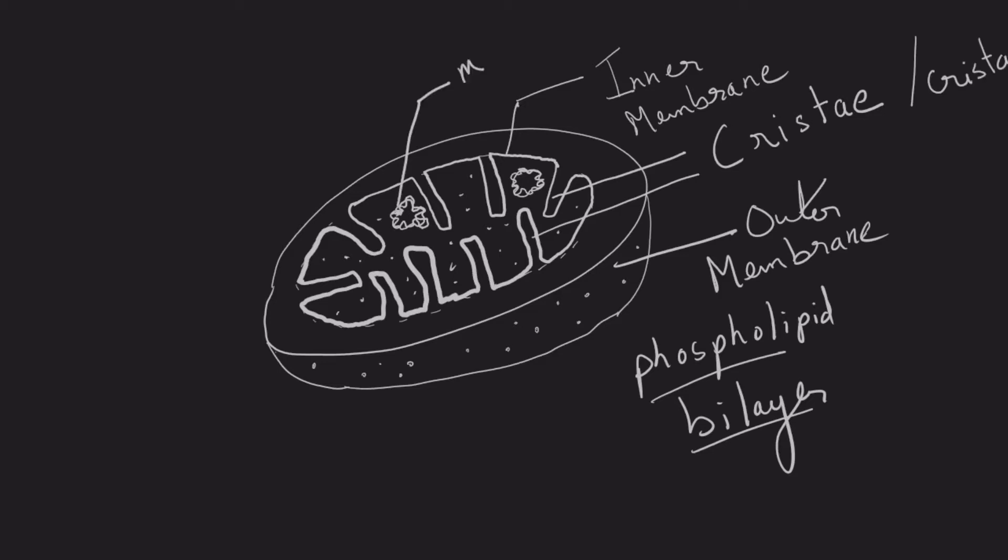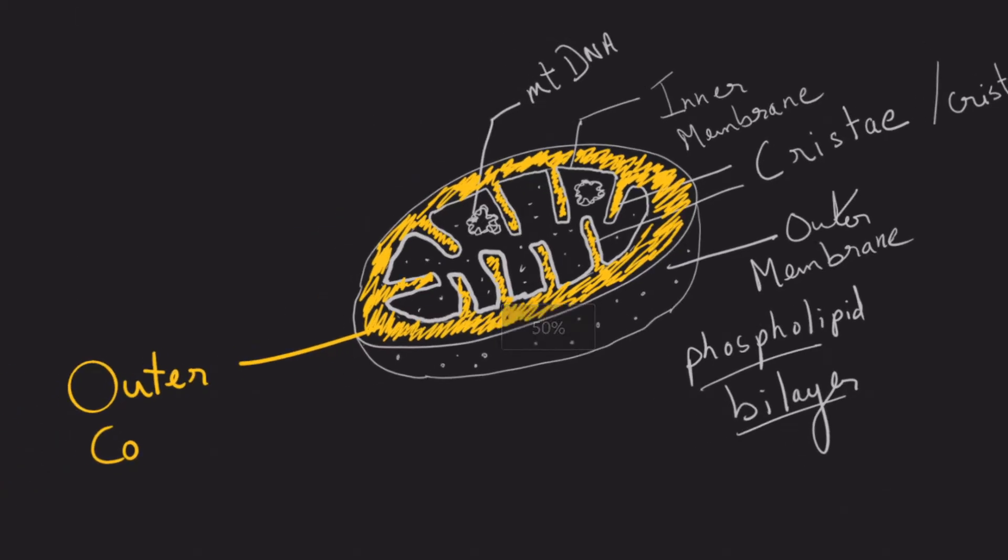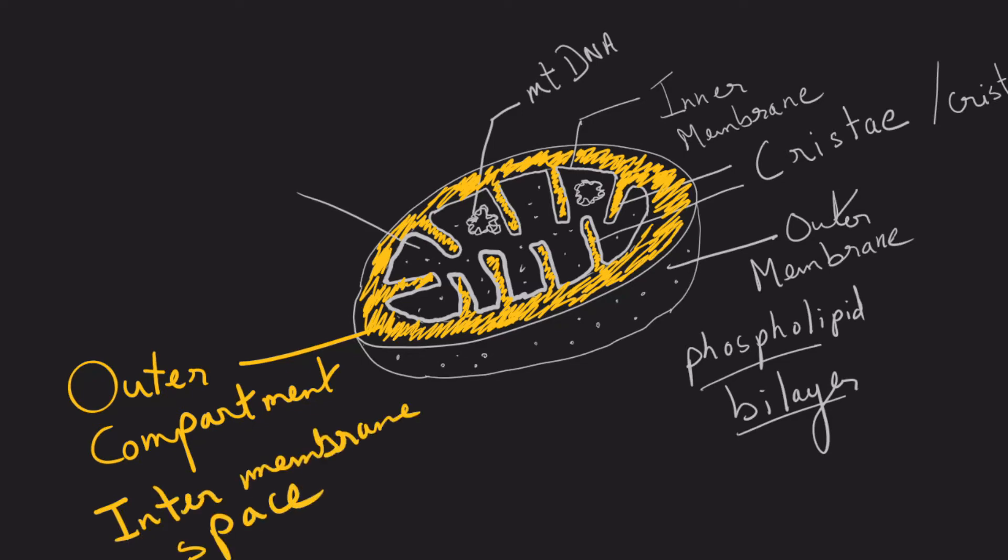So the inner membrane as well as the outer membrane will divide the mitochondria into two compartments: the outer compartment also known as the intermembrane space, and the inner compartment or matrix.